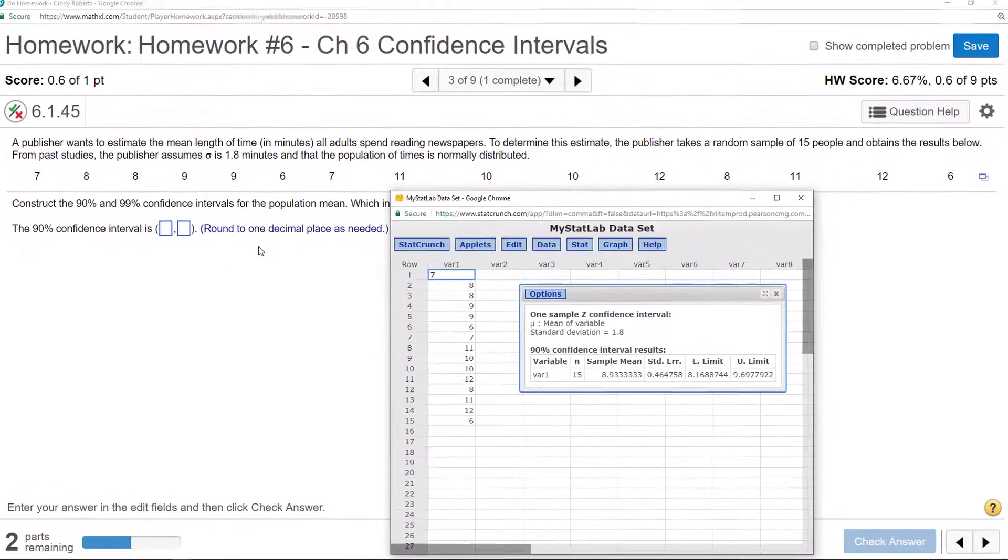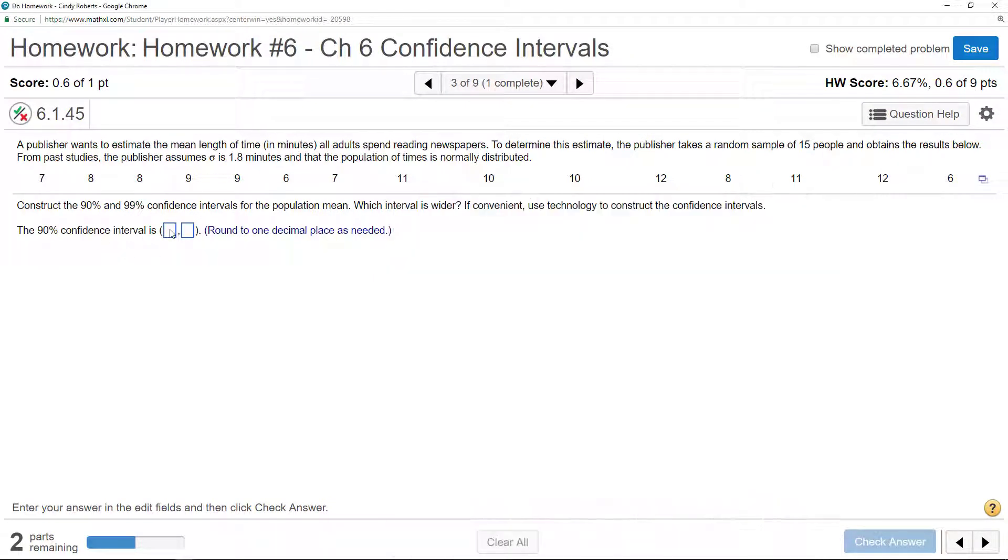I get eight. What do they want? One decimal. Eight point two and nine point seven. Eight point two and nine point seven. Yeah.